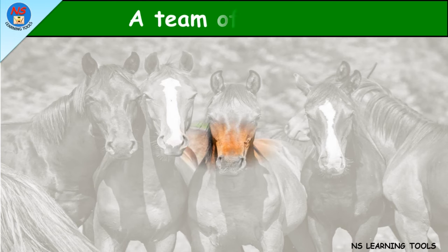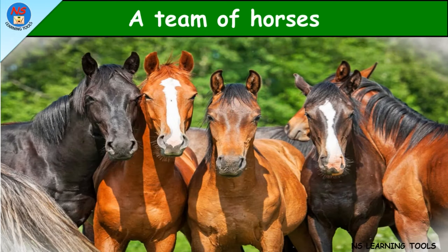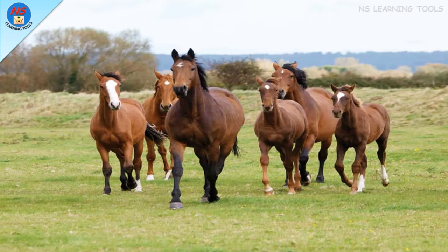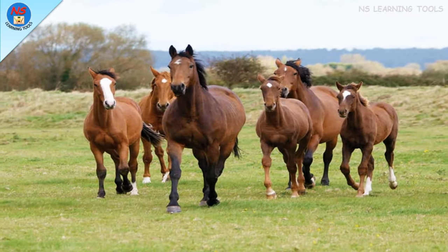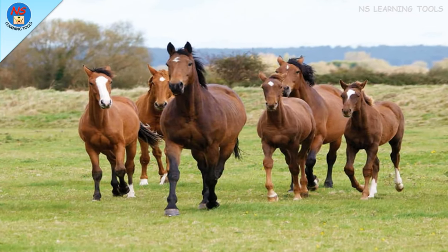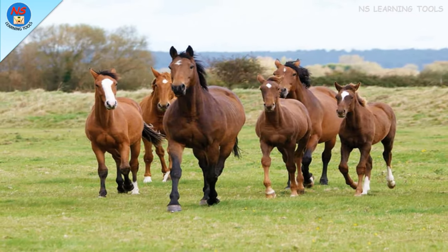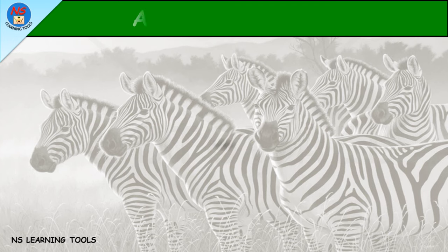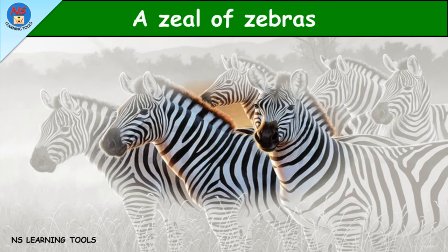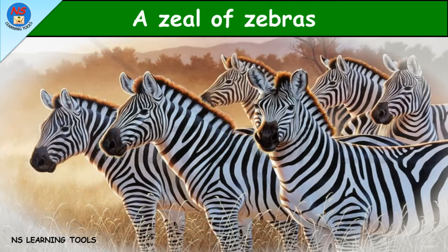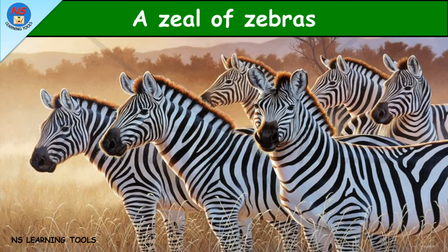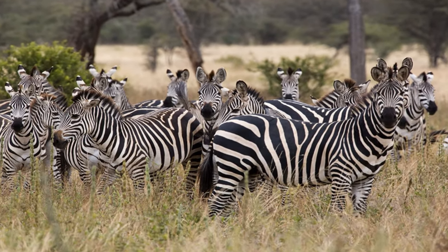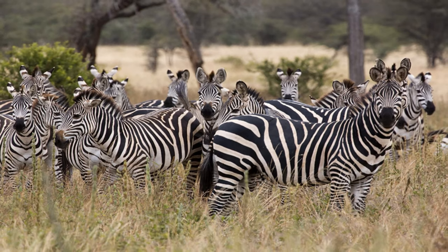A team of horses — a group of horses is called a team. A zeal of zebras — a group of zebras is called a zeal.